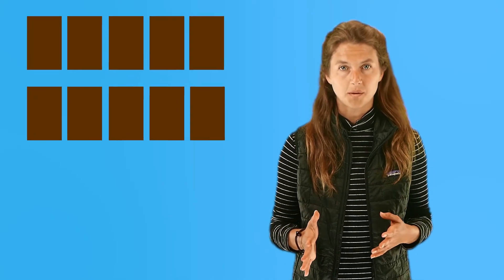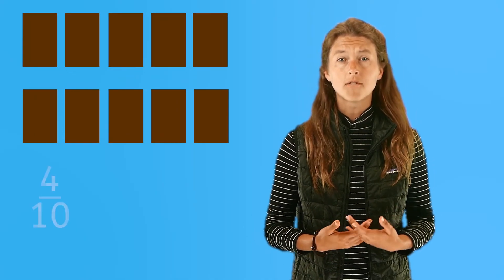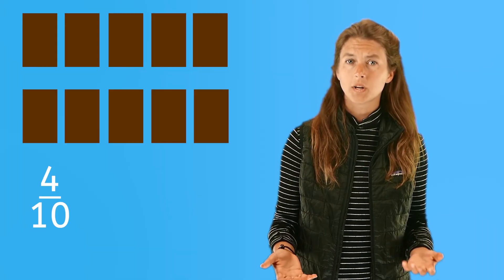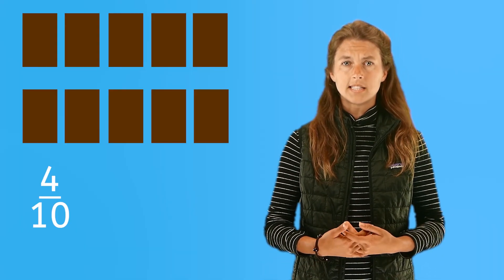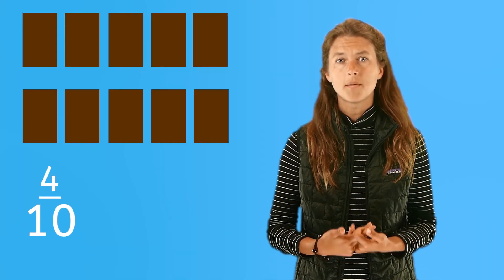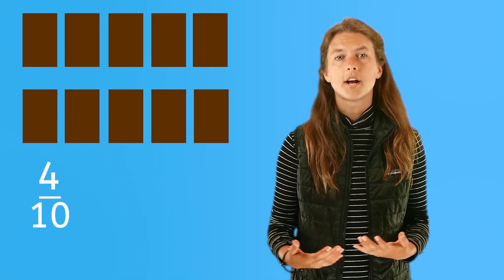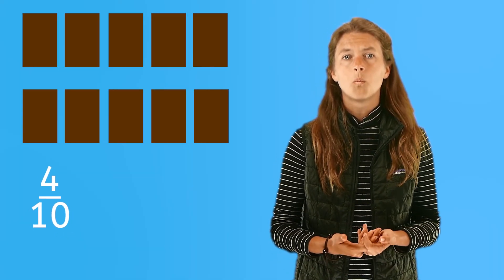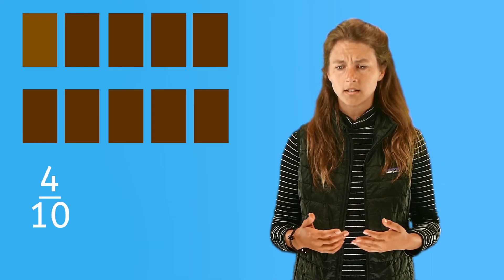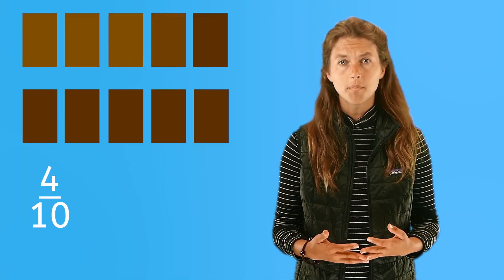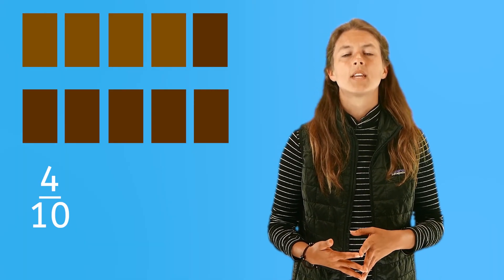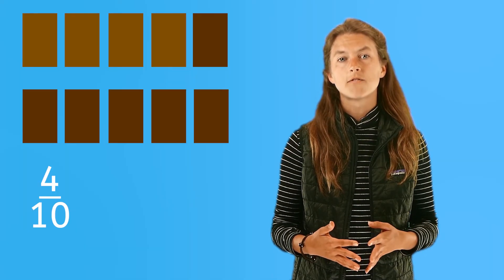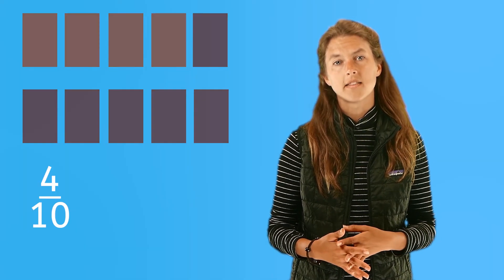Cool! Okay, so what if this rectangle represents a whole candy bar? How would we show that four out of ten, or four-tenths, were eaten? Well, since the denominator shows how many pieces in all, and the numerator shows how many pieces of the candy bar are eaten, we need to color in one, two, three, four pieces like this. This shows or represents four out of ten, or four-tenths.